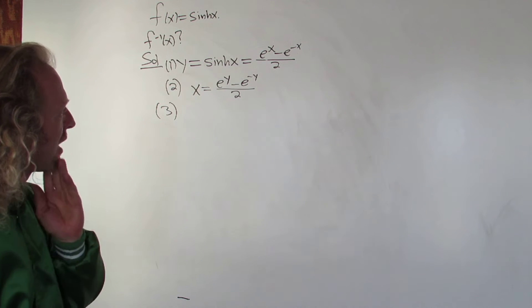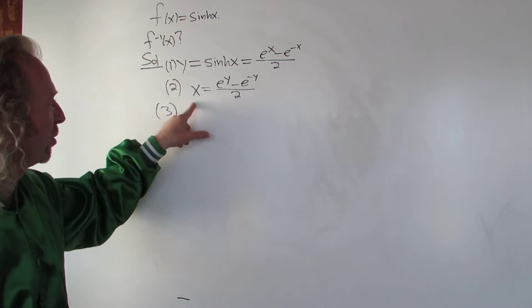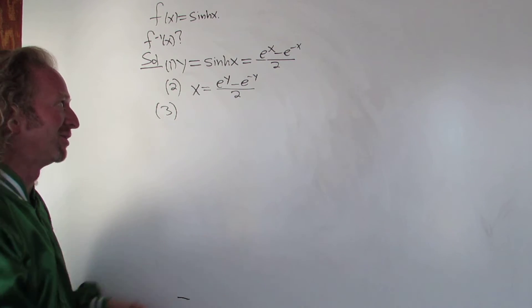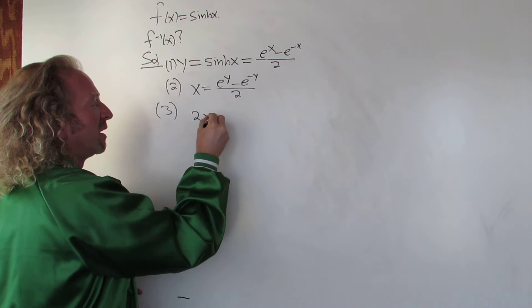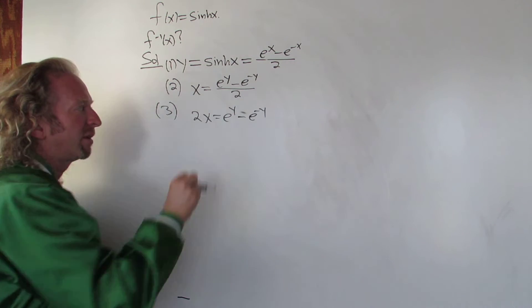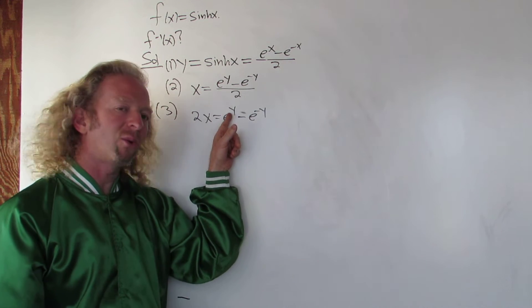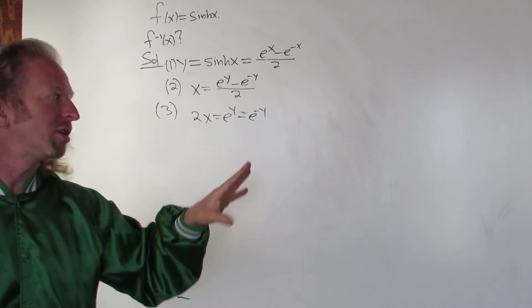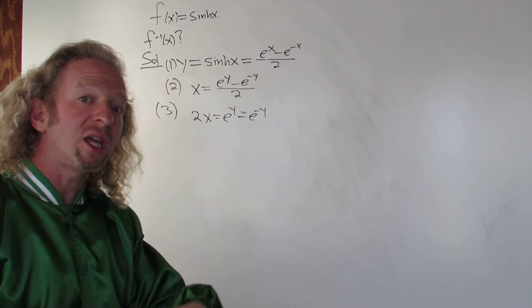So I haven't done this problem in a long time, so I have to think. So maybe we'll start by multiplying by two. That's the obvious thing to do. So let's multiply by two. So 2x equals e to the y minus e to the negative y. Now typically, I've seen this before, typically when you have exponentials like this, like e to the y, e to the negative y, you can manipulate it so that you end up with some type of quadratic equation in e to the y.